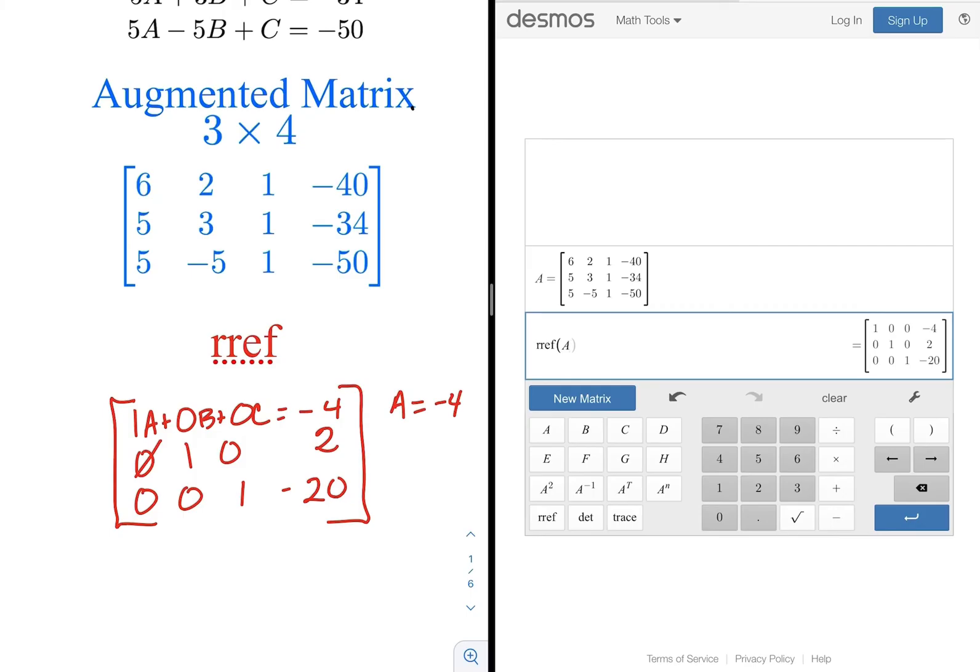So 0A plus 1B plus 0C equals 2. So B equals 2. And 0A plus 0B plus 1C equals negative 20. So C equals negative 20. And that's how you're going to use your Desmos matrix calculator to help you with your homework. Have a great day.